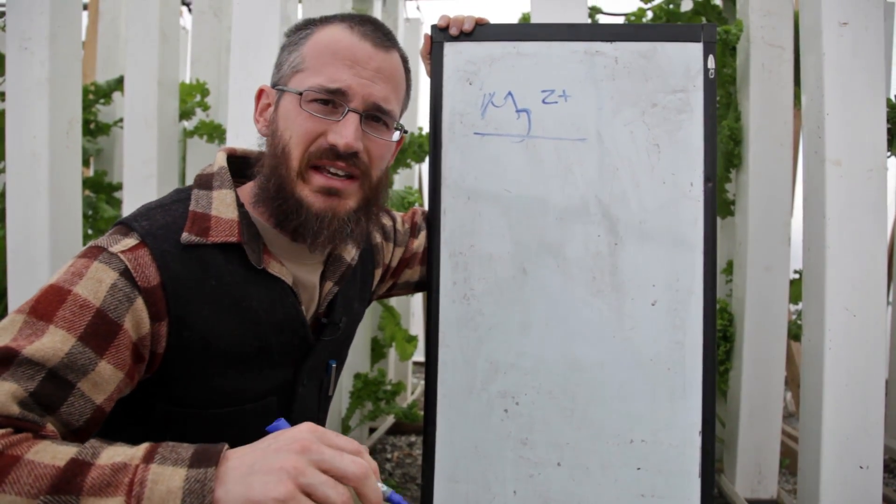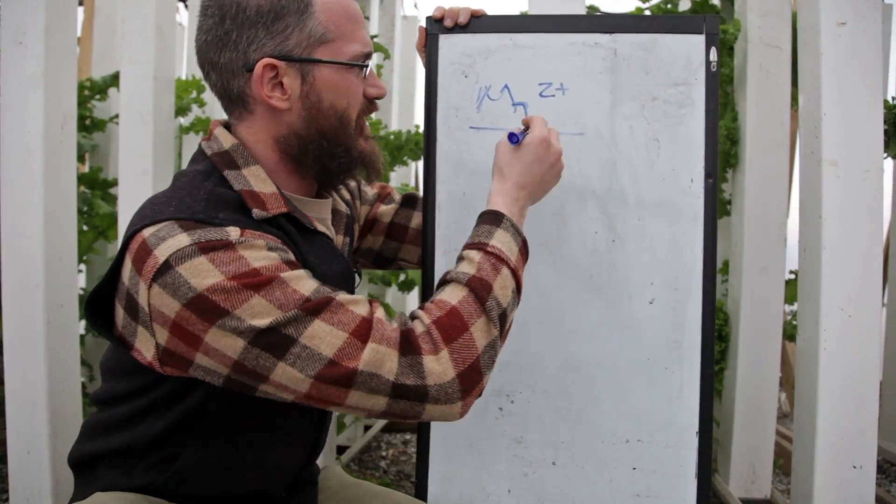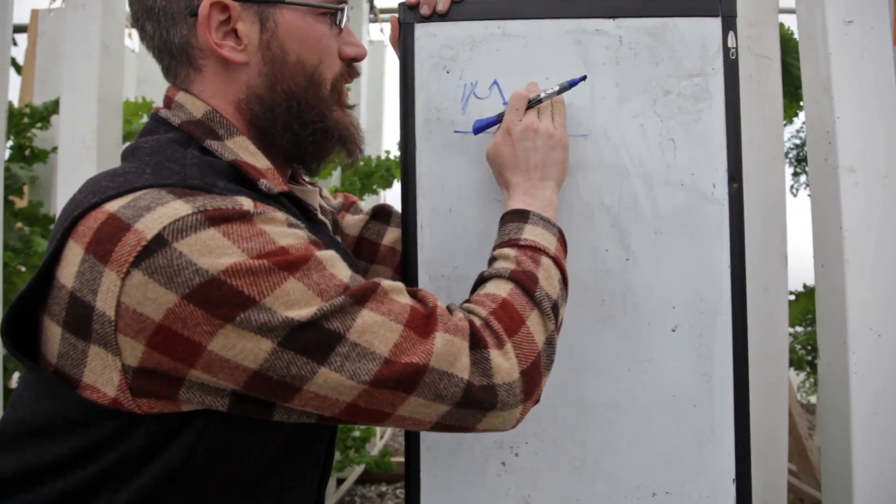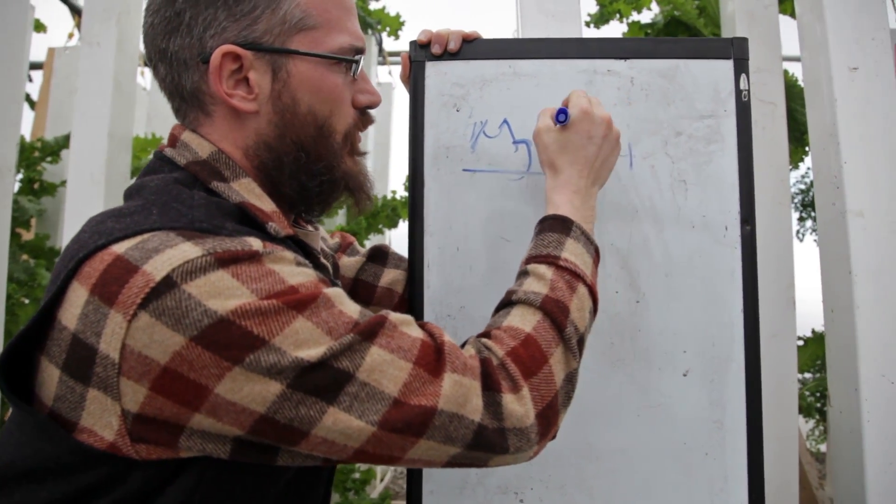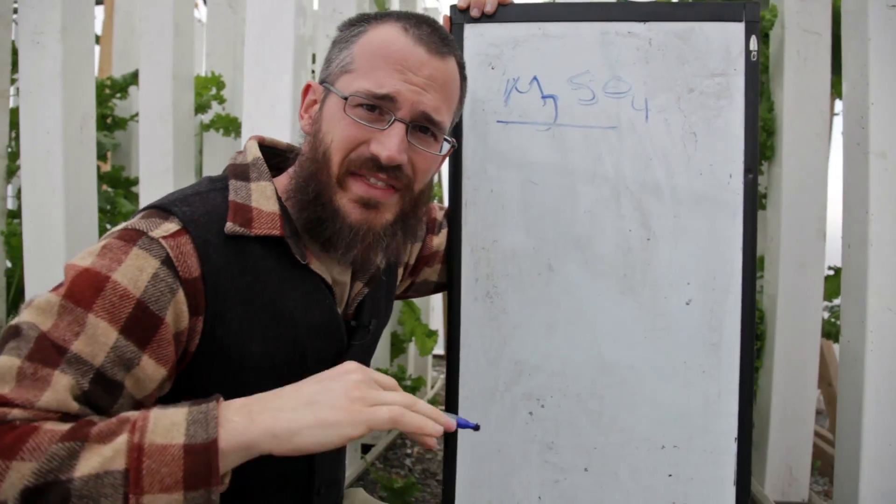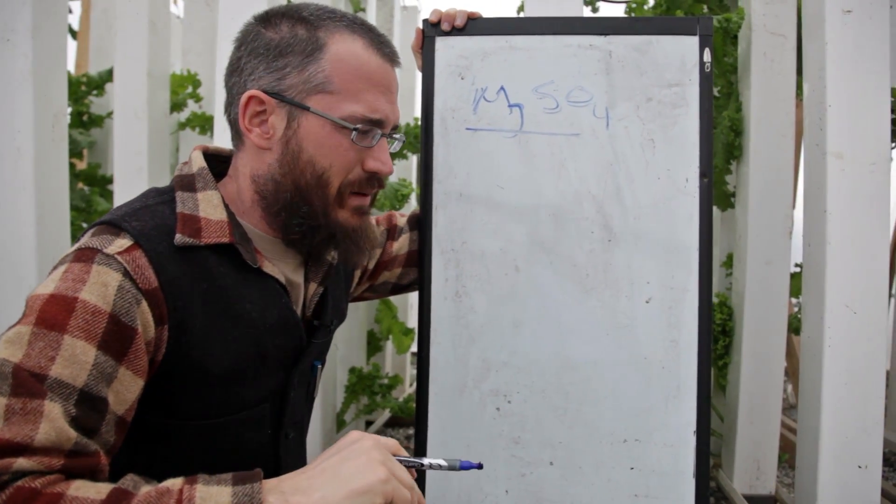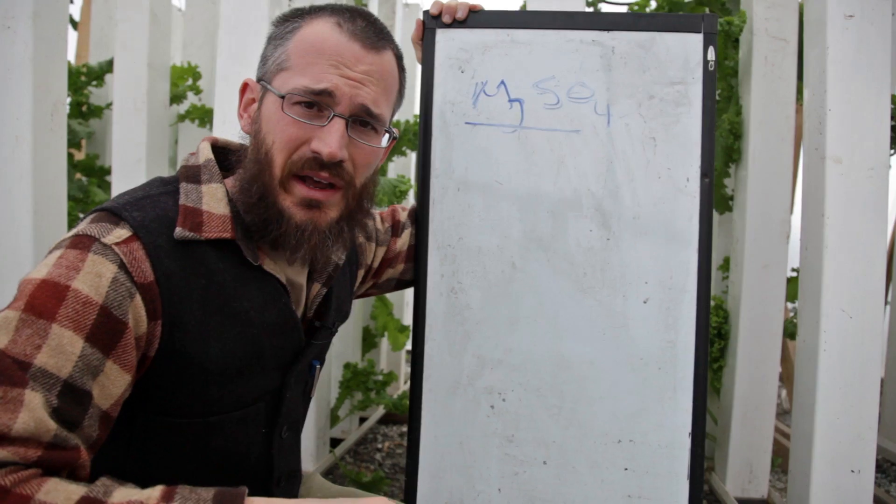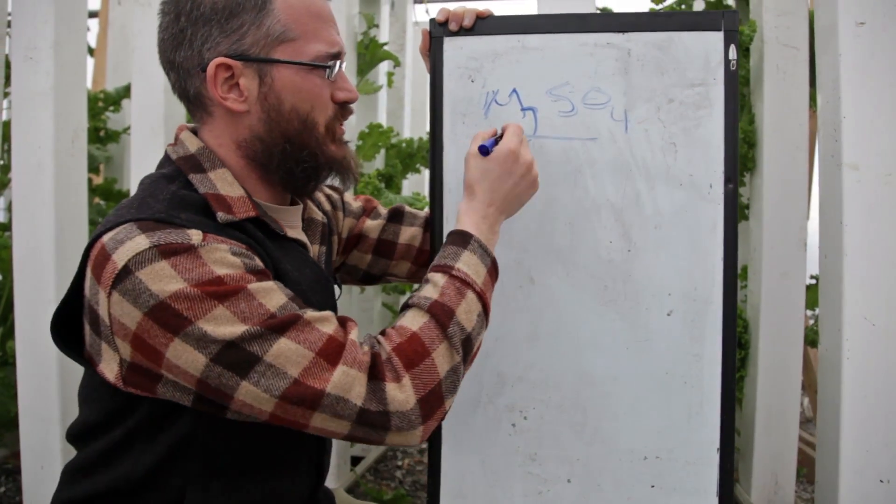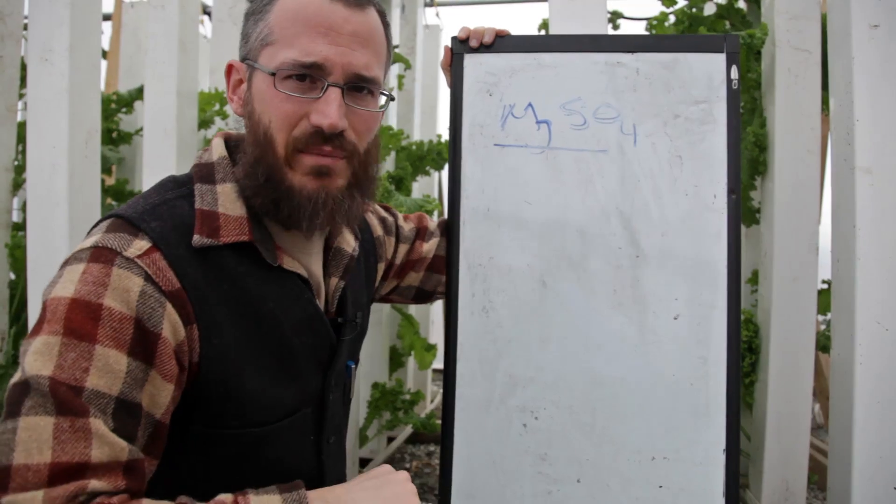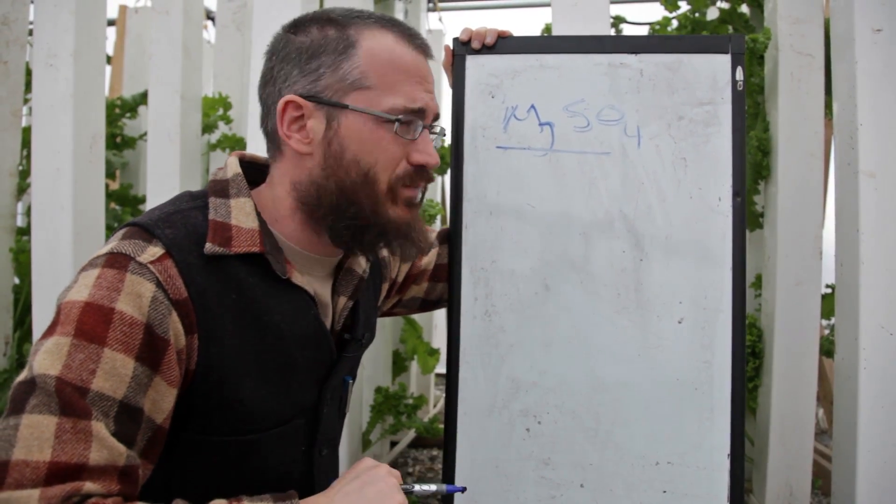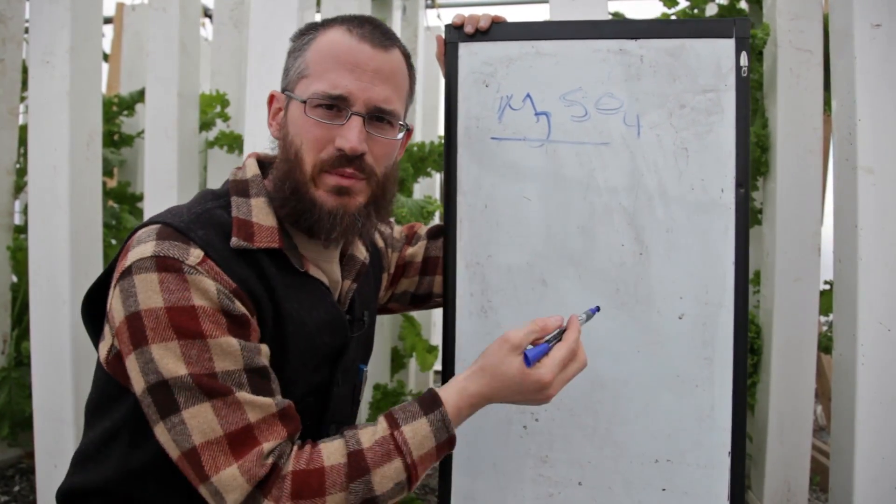So Epsom salt is magnesium sulfate. It's basically magnesium with some sulfate on it, SO4. And you can add that to your system. And there are varying rates. I'm not going to give you a dosage right now because it really depends on what your starting magnesium, the starting concentration of magnesium is in your system.